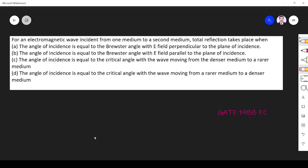Hi friends, in this video let us solve an electromagnetic question asked in GATE 1988 EC paper. The question is: for an electromagnetic wave incident from one medium to second medium, total reflection takes place.